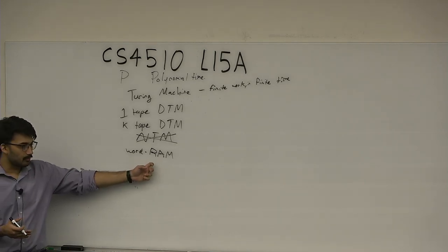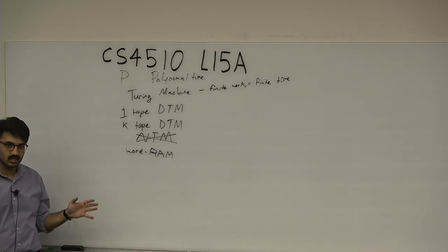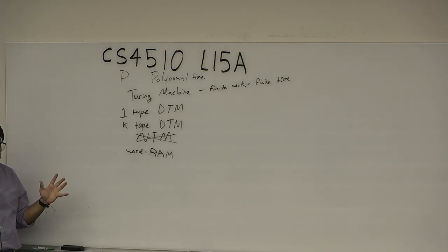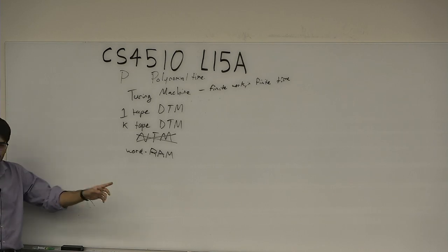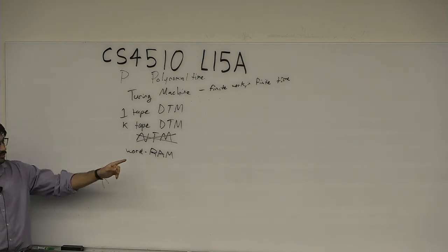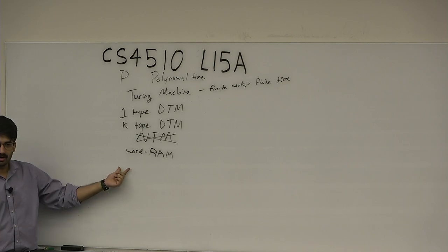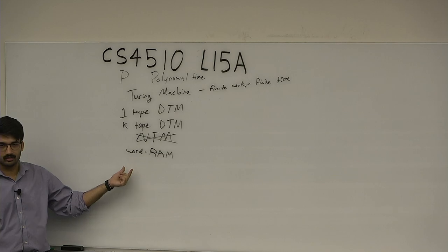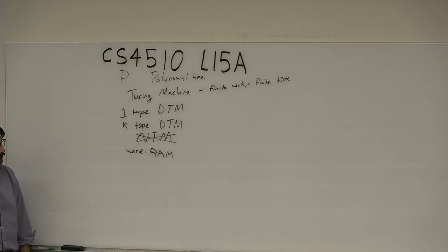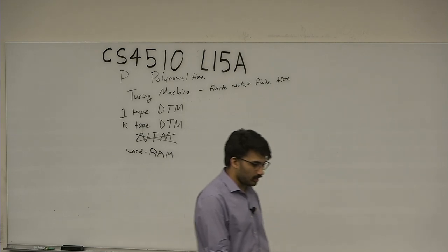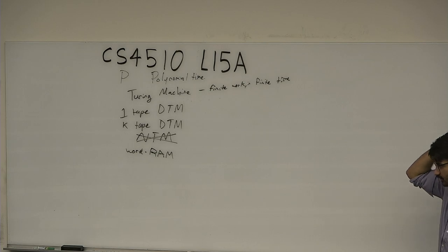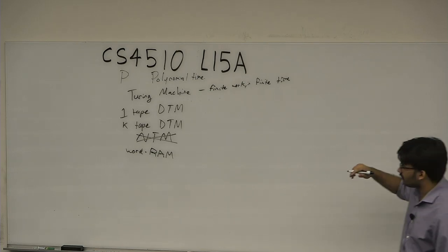The RAM is random access: it has a minimal instruction set — addition, jump, conditional jump — and it can jump. A Turing machine going from cell 1 to cell 10 takes 10 steps; the WORD-RAM machine is allowed to jump. The WORD part means each cell contains a fixed word size, like 64 bits. Does the model matter? I want to argue it kind of does, at least at first, and then figure out a way to make it not matter.